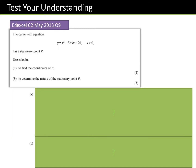Test your understanding — this is a previous exam question worth nine marks. The curve with equation y = x² − 32√x + 20 has a stationary point P. Use calculus to find the coordinates of P. Step one: write in index form: y = x² − 32x^(1/2) + 20. Step two: differentiate — dy/dx = 2x − 16x^(−1/2). At the stationary point, the gradient function equals zero.